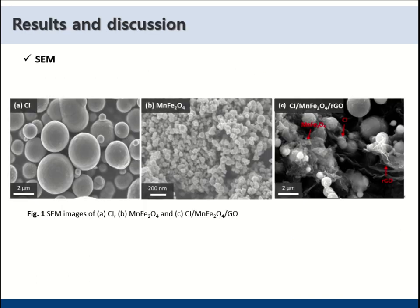The shape of CI particles, MnFe2O4 particles, and CI/MnFe2O4/rGO were observed via SEM. As indicated in A, the CI particles are in sphere shape with smooth surface whose size range is between 2 and 5 micrometers.